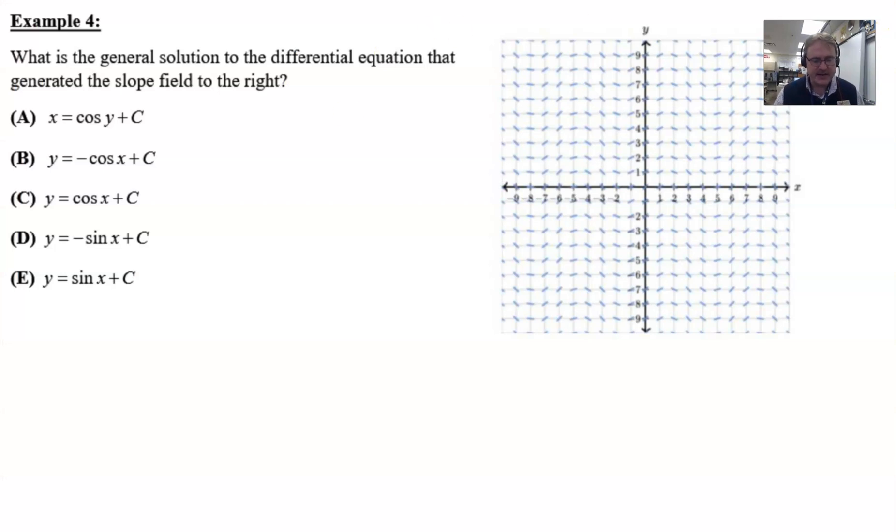We're going to revisit another multiple choice question where you are given a slope field and you are doing a matching. What is the general solution to the differential equation that's generating the slope field to the right? Well, this is where I'm going to have to make a little apology, because I told you about this really cool four corner strategy, and it does work a lot of the time. But there's a few instances that it doesn't work so well. Let's see what I mean.